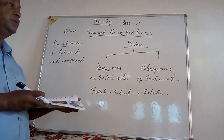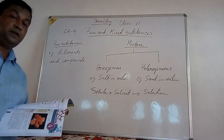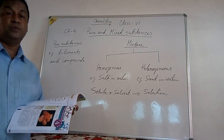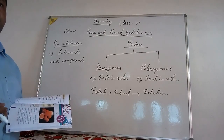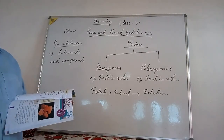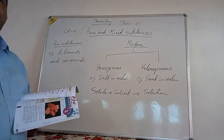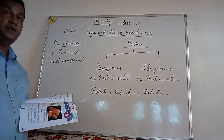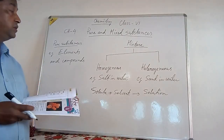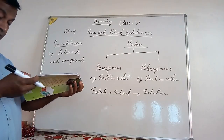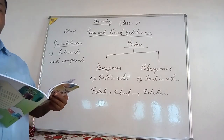For example, tap water is not a pure substance because it is made up of water along with dissolved gases like oxygen and carbon dioxide. Fruit juice is also not pure because it is mixed with carbohydrates, sugar, and other flavors. But elements and compounds are pure substances.